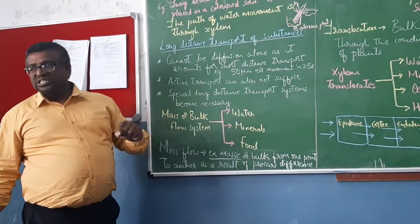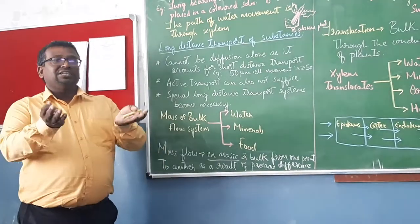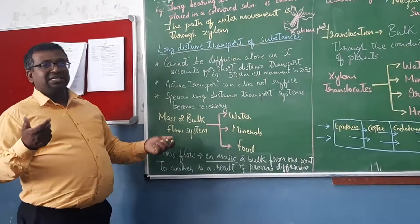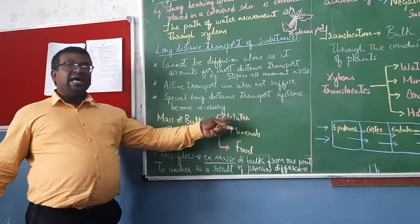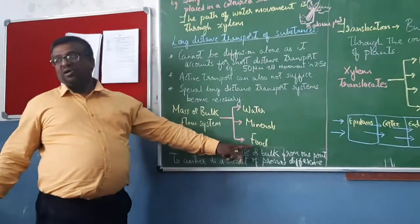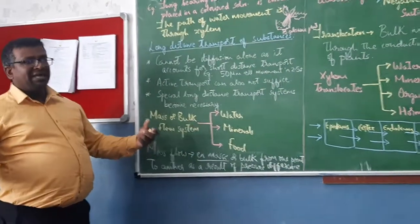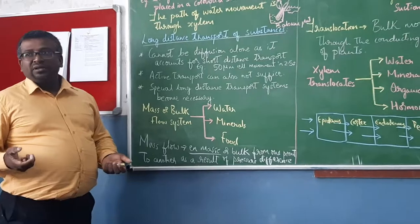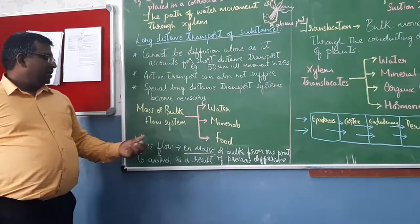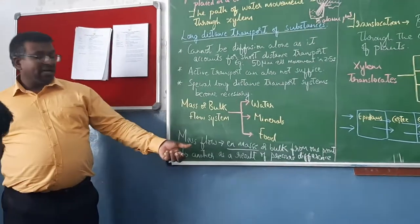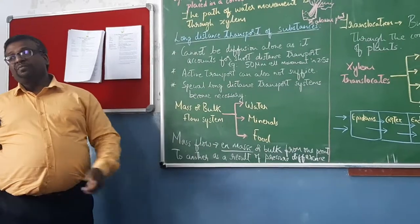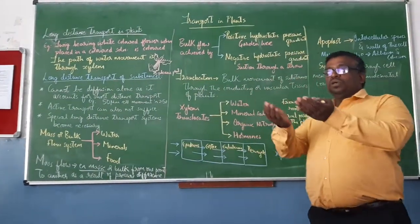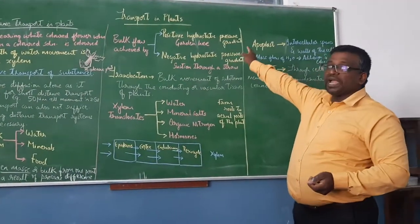Special long distance transport systems are there and they are all carrying en masse or mass. It is a German word, en masse. Mass flow or en masse or bulk flow. What are all carrying en masse? Water, minerals and food, all organic substrates of the plant. Food in plants, what they have synthesized is in the form of glucose and it would be stored as starch. The reserve material in plants is in starch form. Mass flow, en masse or bulk movement of substances from one point to another because of pressure difference it takes place. Bulk flow achieved by positive hydrostatic pressure gradient.